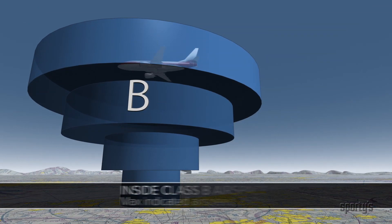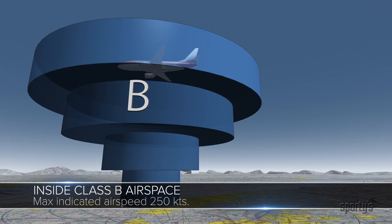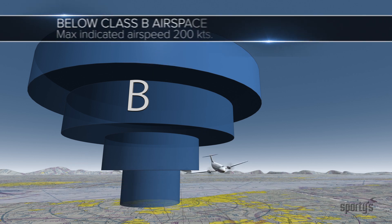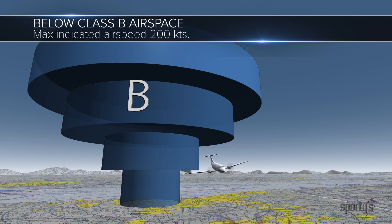Aircraft inside Class B are permitted to maintain 250 knots indicated airspeed, the speed limit for operations below 10,000 feet MSL. However, aircraft operating below the overhanging layers of Class B airspace are limited to 200 knots indicated airspeed.